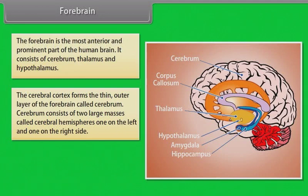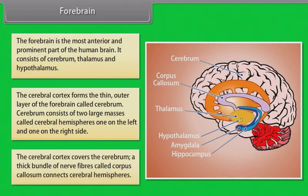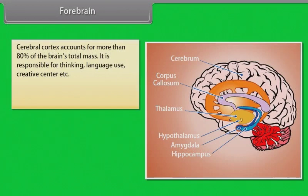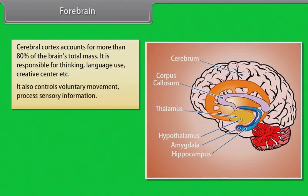The cerebral cortex forms the thin outer layer of the forebrain called the cerebrum, which consists of two large masses called cerebral hemispheres — one on the left and one on the right side. A thick bundle of nerve fibers called the corpus callosum connects the cerebral hemispheres. The cerebral cortex accounts for more than 80% of the brain's total mass and is responsible for thinking, language use, creative functions, voluntary movement, and processing sensory information.